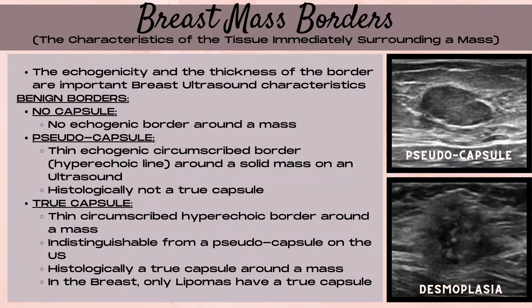The next method of characterizing a breast mass on ultrasound is by looking at the borders of the mass. The border is the characteristics of the tissue that immediately surrounds a mass. The echogenicity and thickness of the border are important breast ultrasound characteristics. The first type of benign border is no border, which means no capsule around the mass — just the mass and then the breast tissue.